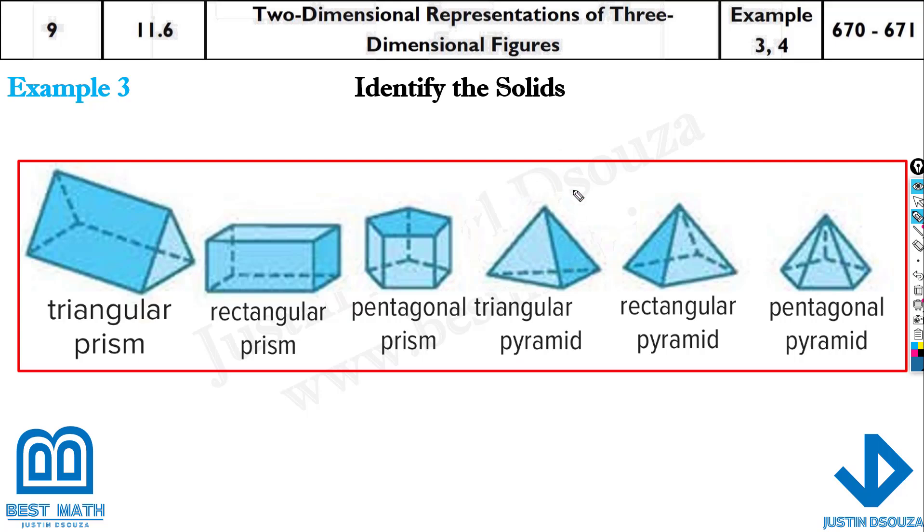Whereas a pyramid will have a base but it doesn't have the same thing on the top as well, it'll be just a point at the top. It is inclined from that point, it becomes sides. This is called a pyramid. Now pyramids base matters, this is a triangular pyramid, rectangular pyramid and a pentagonal pyramid. That is about the solids.